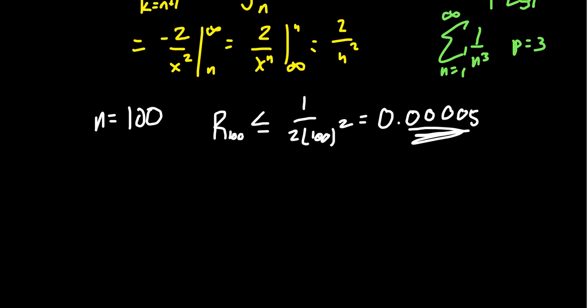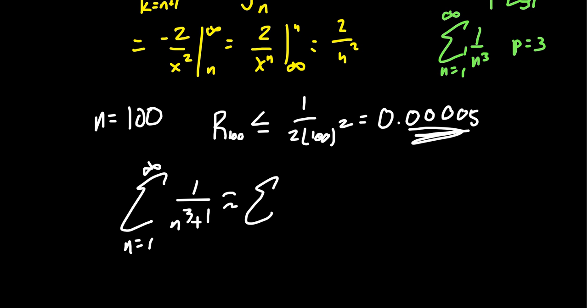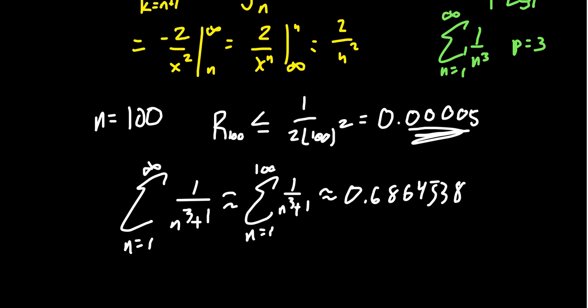Returning to the series: the sum from n equals 1 to infinity of 1 over n cubed plus 1 is approximately the partial sum from 1 to 100 of 1 over n cubed plus 1. Using a calculator, that gives us 0.6864538. Looking at the first four decimals — 6864 — we know those are accurate, with a margin of error of up to 5 in the fifth decimal place. So we have pretty good accuracy here.